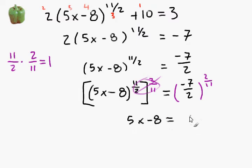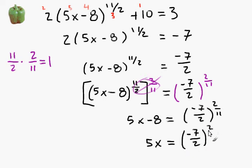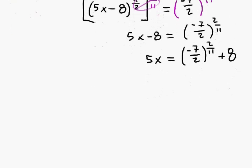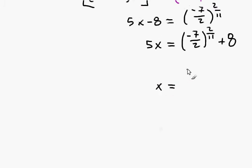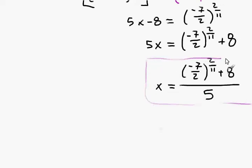And, that will be equal to, we can't really simplify, minus 7 halves to the 2 elevenths power. And, we really don't have much of an option. We just have to add 8 to that. Again, we can't simplify. So, we're just going to have to take this and divide it by 5. So, we'll have some very, very ugly solution here. But, it's still our solution.